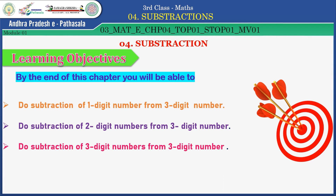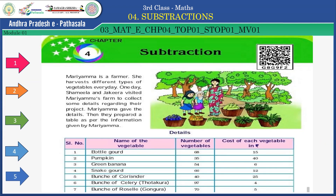Shall we enter into the first part — introduction of subtraction. Children, observe the picture. Mariamma is a farmer. She harvests different types of vegetables every day. One day, Shamila and Jakira visited Mariamma's farm to collect some details regarding their project. Mariamma gave the details, and they prepared a table as per the information given by her.